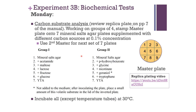Group 1 will also have a YTA plate as a positive control. Group 2, after resetting the plate one more time, will have a second mineral salt agar plate as the negative control, p-hydroxybenzoate, glycine, nicotinate, geraniol — which is very volatile, so add the liquid to the lid and invert it directly onto the plate — the amino acid tryptophan, and a YTA plate.